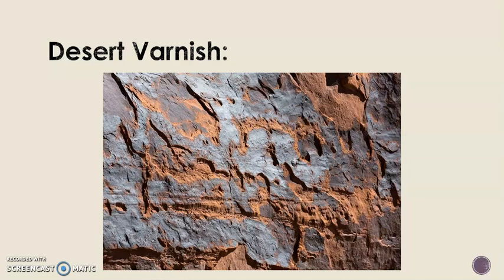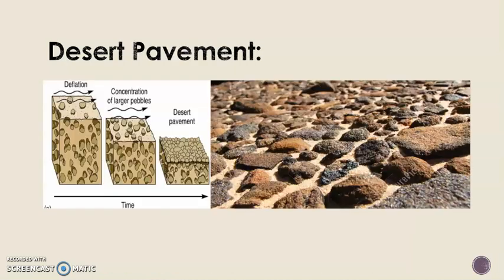And finally, desert pavement. These are closely packed and interlocked angular and rounded rock fragments in a fine sand and dust ground mass. They are formed as fragments of rocks dispersed across each level of beds are gradually brought together to an equal level through the gradual erosional cycle.